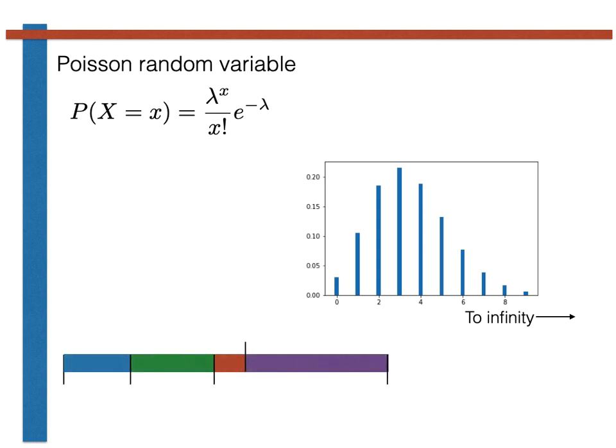To see how we can generate Poisson random variables, consider the figure shown here that illustrates the segmented line that we would draw for a trial that can take values of zero, one, two or three. As we did for the three outcome multinomial, we start by dividing the range between zero and one into segments with lengths corresponding to the probabilities of getting zero, one, two and three. This is what is shown here in the multicoloured line.